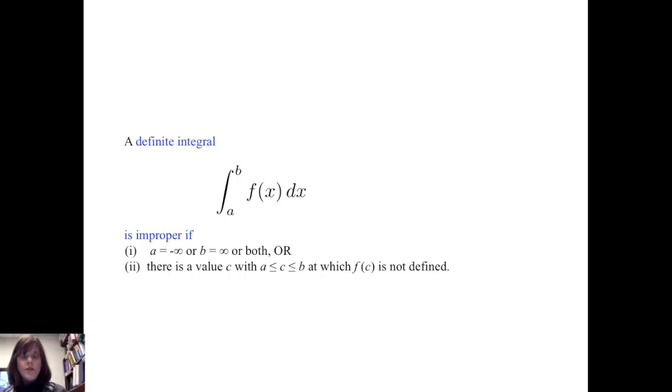A definite integral from a to b of f of x dx is improper if a is negative infinity, or b is positive infinity, or both; or there is a value c with c between a and b at which f of c is not defined and f gives an infinite discontinuity. In the first case, we have a type 1 improper integral. In the second case, we have a type 2 improper integral. In this video, we will discuss how to handle both using limits.